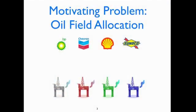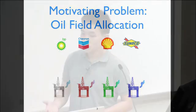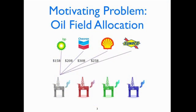First, let me start with a motivating example: the oil field allocation scenario. Suppose the government wants to allocate a bunch of oil fields to several companies, say BP, Shell, and so on. For each oil field, different companies may have different values for it, for various reasons.